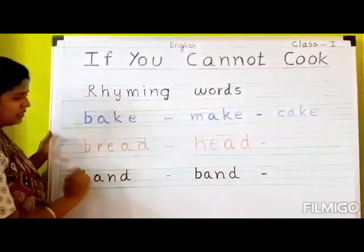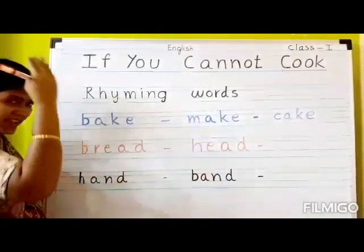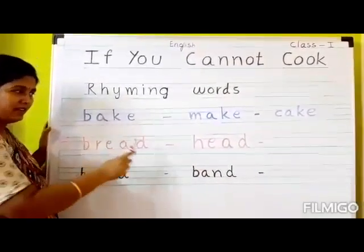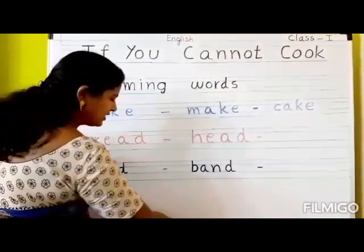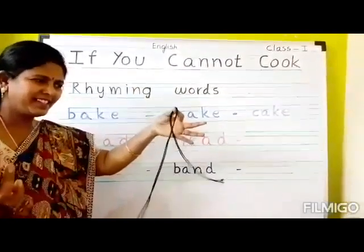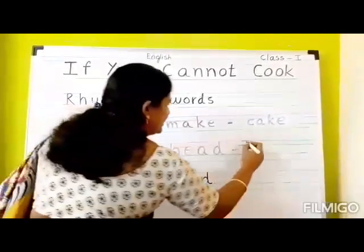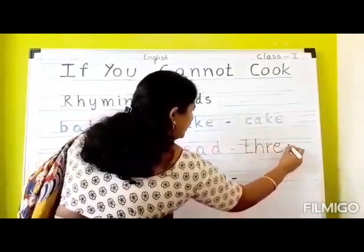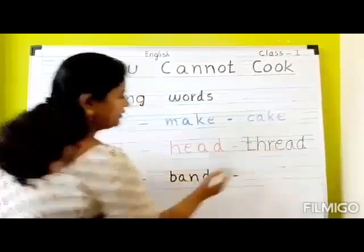The next rhyming word pair is bread and head. Show your head, all of you. Can you give me one rhyming word for bread and head? Here is a clue — look at this. What is this? Thread! The spelling of thread is T-H-R-E-A-D. If you add T-H to 'read,' it becomes 'thread.'